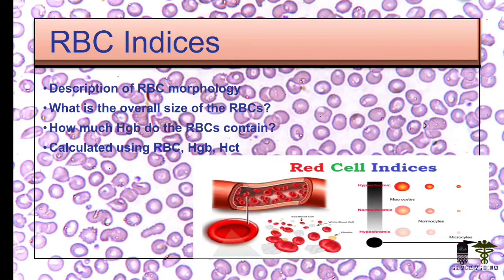RBC indices describe the morphology of RBCs — the overall size and shape. The variation in size of RBC morphology can lead to different shapes of RBC, as shown in the chart in the previous video. The indices measure how much HB the RBC contains, calculated using RBC, HB, and hematocrit.